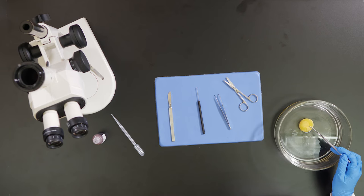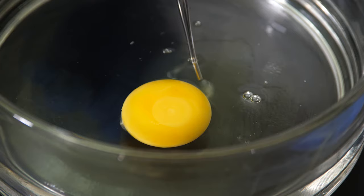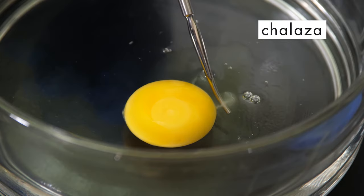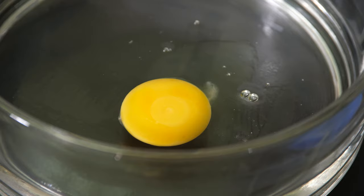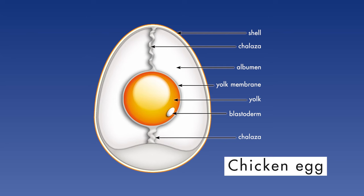In a few minutes, we will look at the blastoderm under a microscope, so we can see some of its details. Beside the yolk is a strand of white tissue. This is called the kaleza. There is another kaleza on the opposite side of the yolk. The two kalezae are strands of protein. As you can see in this illustration, the kalezae hold the egg in place while it is in the shell.